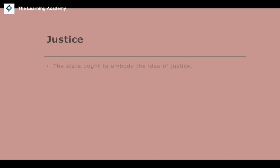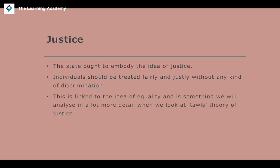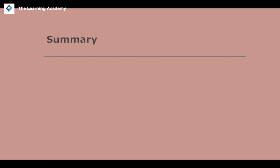The final point is justice. The state ought to embody the idea of justice, which generally means that individuals should be treated fairly and justly without any kind of discrimination based on race, sex, sexual orientation, gender, or other characteristics. This is linked to the idea of equality, and it is something we'll look at in more detail when we discuss Rawls's theory of justice.